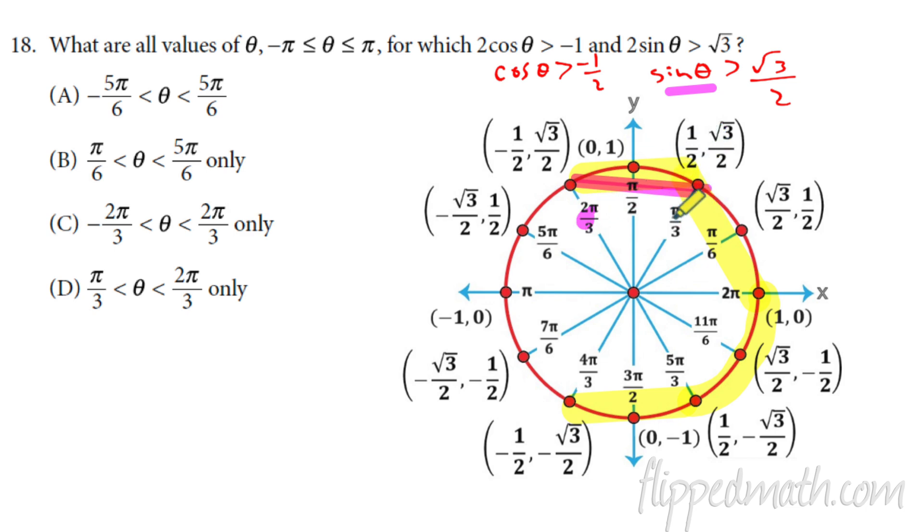Even though my little program here makes it a straight line, but it's from, what do we got? Negative one half all the way to positive one half. So what are those angles? Two pi over three, pi over three. So we got one of those choices here, pi over three to two pi over three only. Choice D.